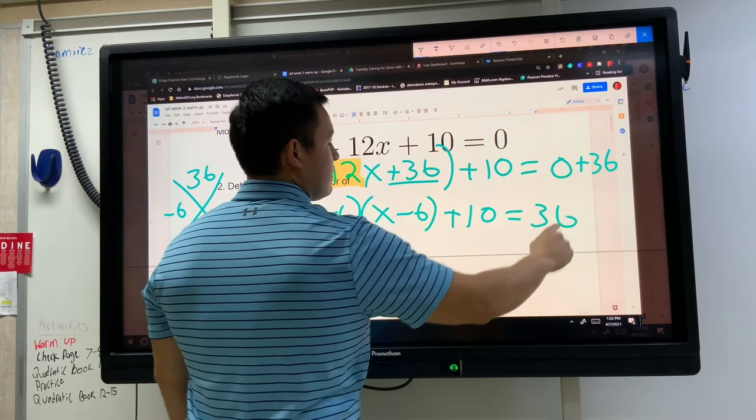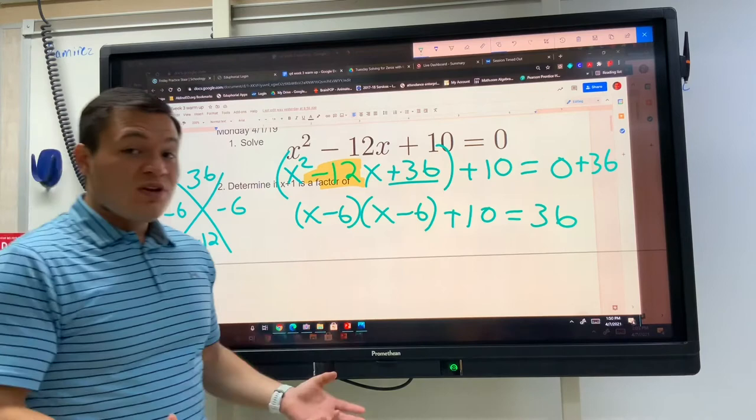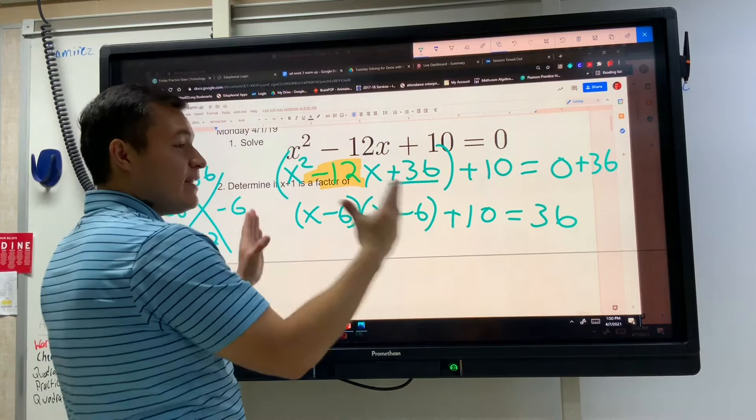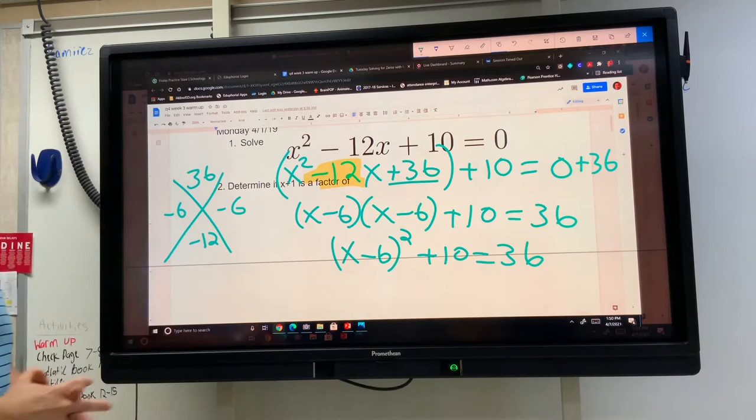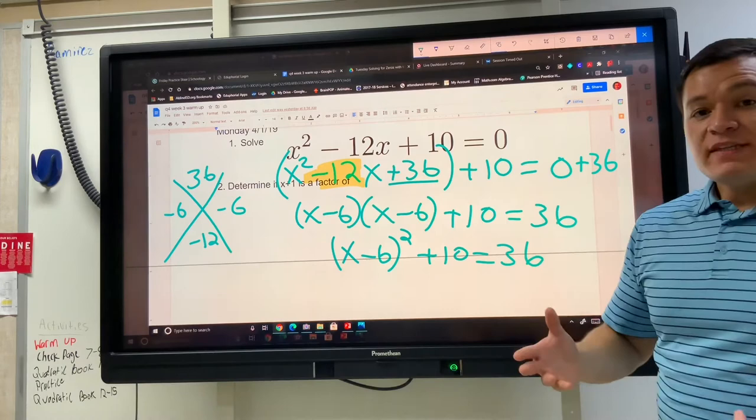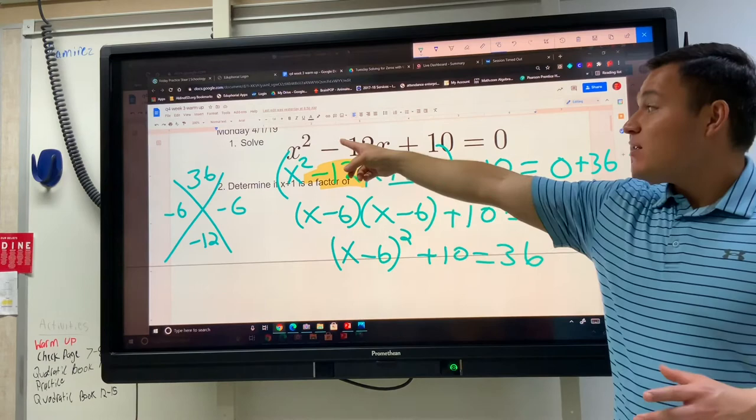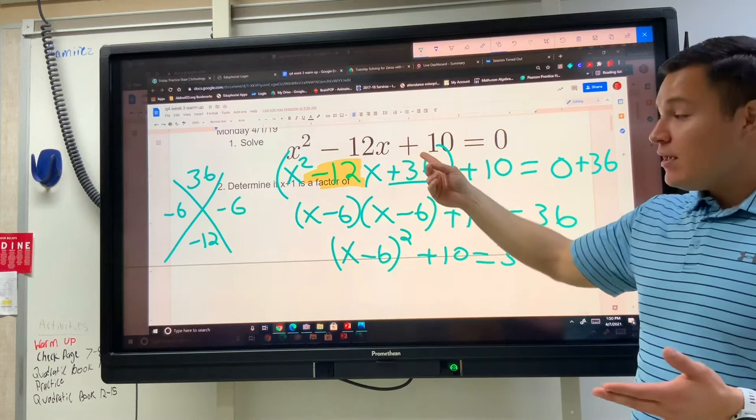Notice that we have the same factor happening twice. We can abbreviate that. We can combine both of these. That's x minus 6 times x minus 6. That's the same thing multiplying by itself which means we can write that as x minus 6 squared plus 10 equals 36. Once we get to this part, remember our goal is to solve it for x, and factoring it originally, factoring this original thing didn't work, so then we came up with the idea of let me add a certain thing so that way I can factor it. We factored it now and we're trying to solve for x.